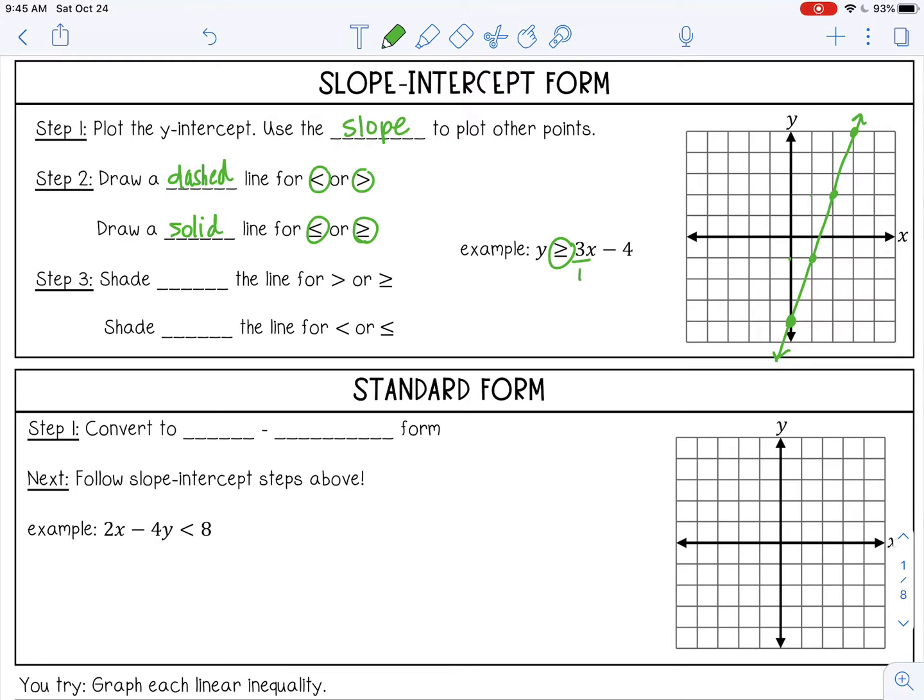The third step is shading. We shade above the line for greater than or greater than or equal to, and we shade below the line for less than or less than or equal to. Since this is greater than or equal to, I'm going to shade above the line. All of those are solutions to that inequality.